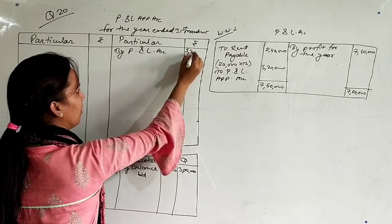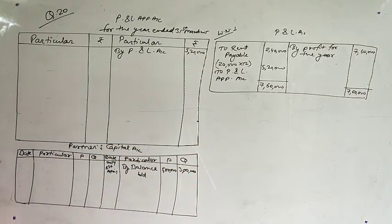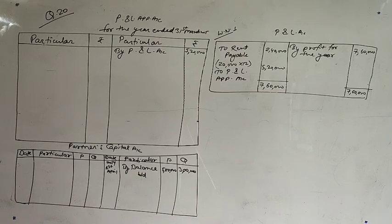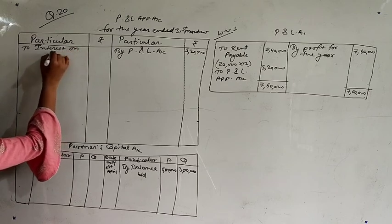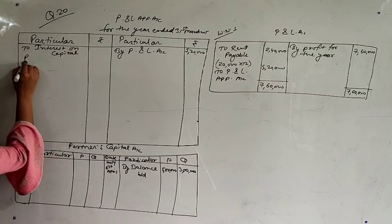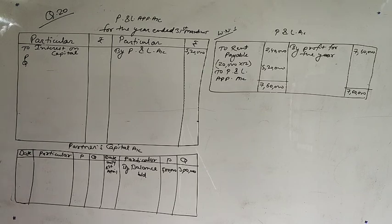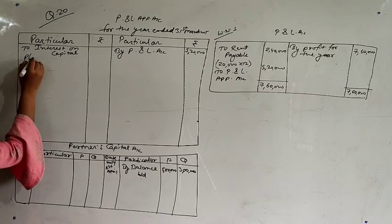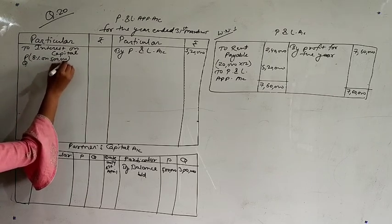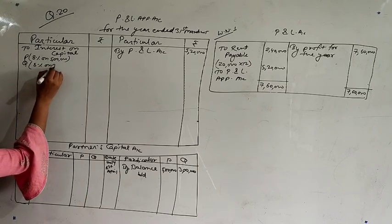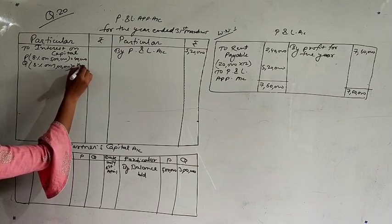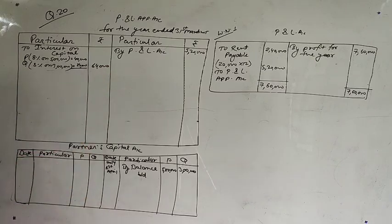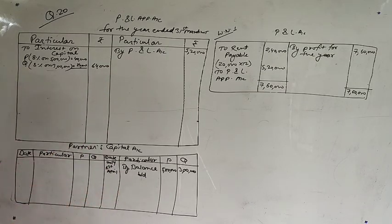In the P&L appropriation account, we credit 5,20,000 from the P&L account. Now, interest on capital at 8%: for P it is 8% on 5 lakh = 40,000; for Q it is 8% on 3 lakh = 24,000; total interest on capital = 64,000. This amount is also transferred to the partners' capital accounts on 31st March 2015 — 40,000 for P and 24,000 for Q.